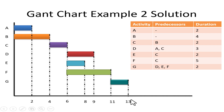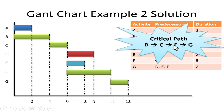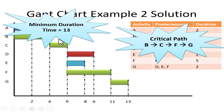The minimum duration for this system is 13. To find the critical path, I begin from the last activity and trace back through each predecessor to its beginning. Going through each activity from end to beginning, the critical path is P, C, F, G. So the critical path is P→C→F→G and the minimum duration is 13.